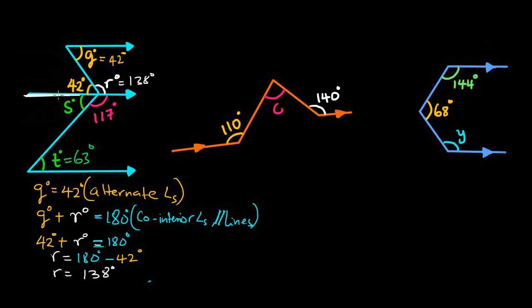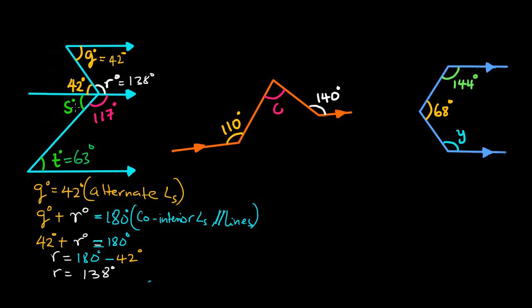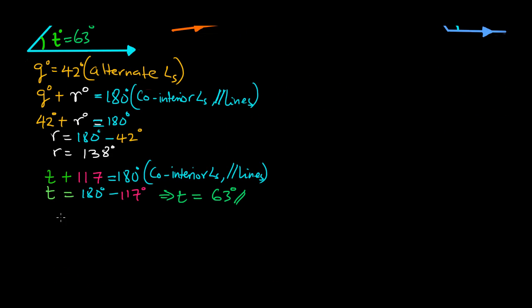Now for angle S: this figure looks like Z, so this angle and that angle are alternate angles. The angle S and the angle T are alternate angles, and alternate angles are equal. Since the angle T is 63 degrees, the angle S would also be 63 degrees. So the angle S is equal to the angle T, which is equal to 63 degrees — alternate angles.